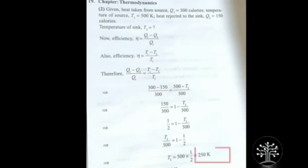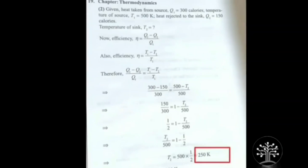The answer is 250K. This is from Thermodynamics. Without studying anything — done! The formula for efficiency and Q and all those things — we solved this without studying by using only our trick. Let's move to our next question.